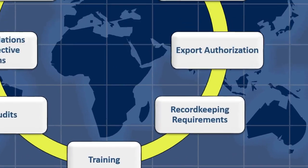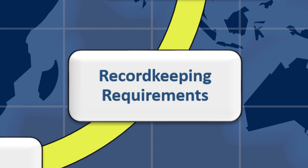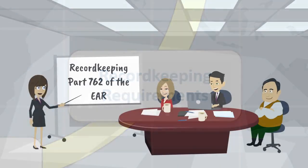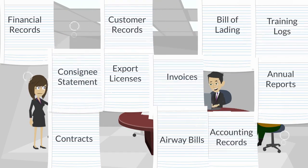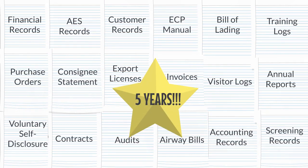Element number 4 is Record Keeping. The circular chart focuses on Record Keeping Requirements, and the screen changes to a conference room with the female character teaching attendees about Record Keeping Requirements. BIS Record Keeping Requirements are found in Part 762 of the EAR. Parties are required to keep export-related records for five years from the latest of certain activities, such as the date of export, re-export, transshipment, diversion, or termination of the transaction. Pictures of various documents appear on the screen as examples of the types of records to keep on file.